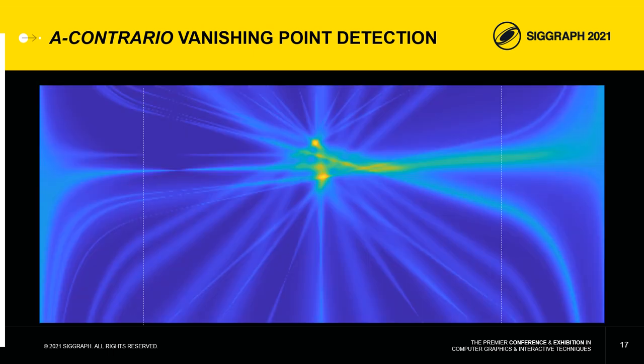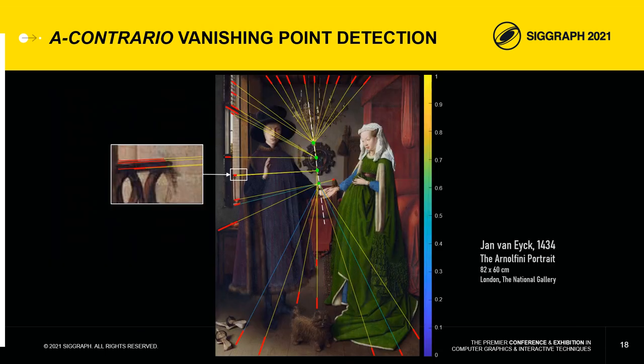This map shows the probability distribution of a vanishing point in the Arnolfini portrait based on this consistency measure. These four points are the ones we get by applying the a contrario detection method to this map. As you can see, these four points are aligned periodically along a slightly inclined vertical axis.